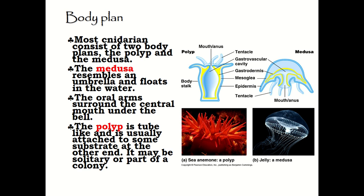Most cnidarians consist of two body plans: the polyp, such as the hydra and sea anemones, and the medusa, such as the jellyfish. The medusa resembles an umbrella and floats in the water, with oral arms surrounding the central mouth beneath the bell. The polyp body plan is tube-like and usually attached to a substrate, and may be solitary or part of a colony.